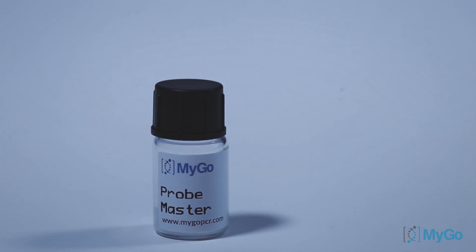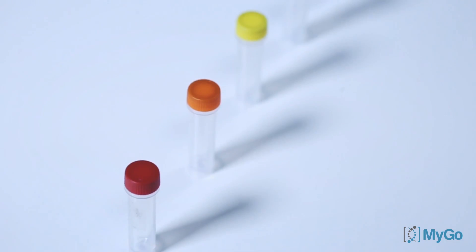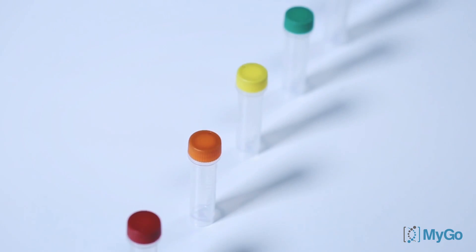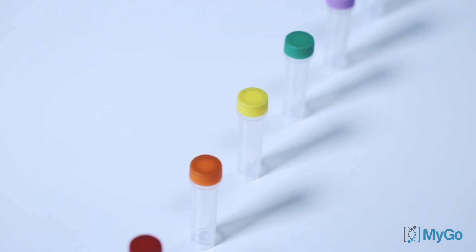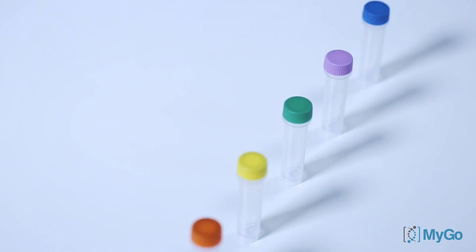The kit contains one vial of MYGO Probe's master, which is a lyophilized master mix and a buffer that's used for resuspension. The kit also contains six DNA tubes with caps colored red, orange, yellow, green, violet and blue.